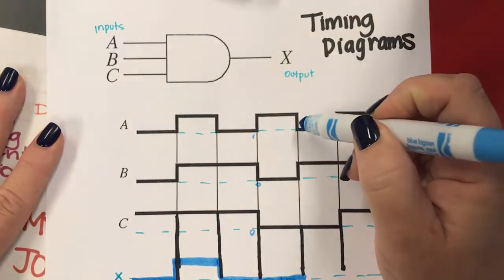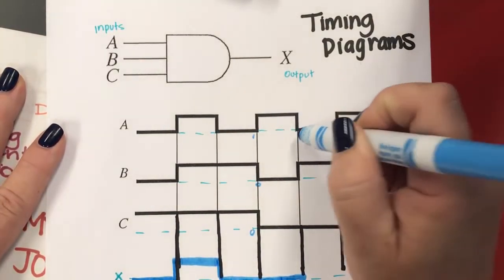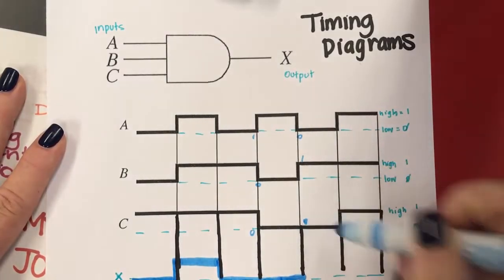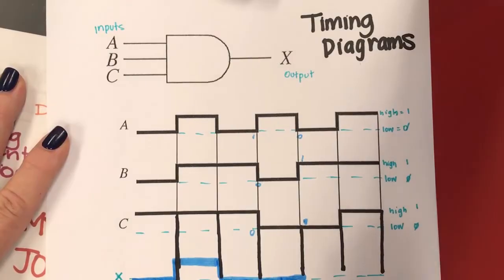So now we're going to check at the next line, now A has gone to zero. So even though this is one, this happens to be zero. Any one of them being zero will keep it zero.